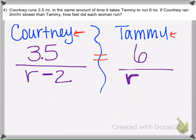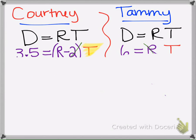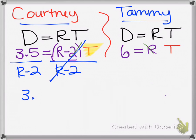Now we're going to set them equal because of this. We talked in the last example that there's this formula, distance equals rate times time, so if we plug in that Courtney is 3.5, goes a distance of 3.5, and her rate is 2 slower than Tammy's, that if we divide by R minus 2, we have an equation for the time.